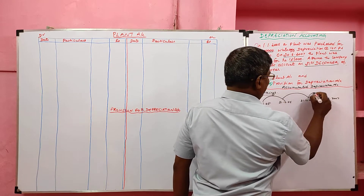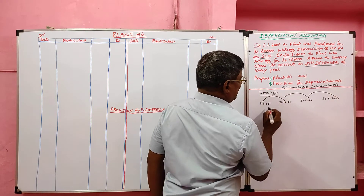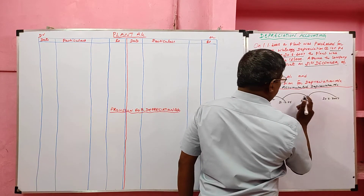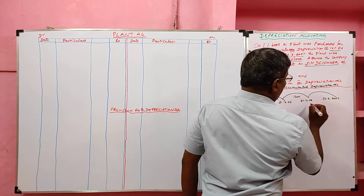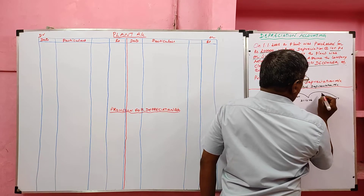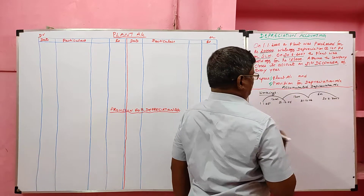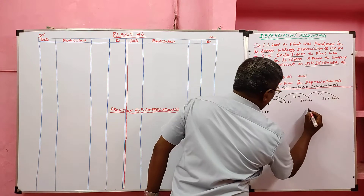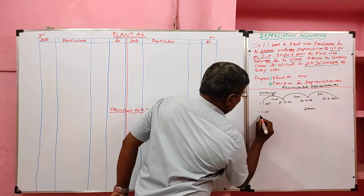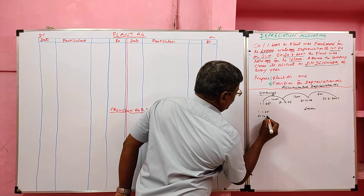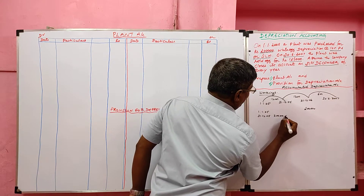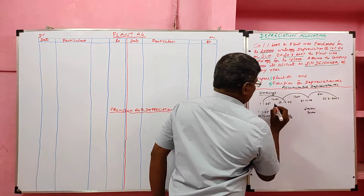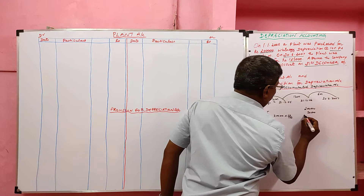So there are three years in total. In the first year we used 12 months, January to December. We bought the plant on 1st January 2005 for 2 lakh rupees. The first year ends on 31st December 2005. On 2 lakh we provide 10% depreciation, which is 20,000. Since we used 12 months, we provide the full year depreciation.